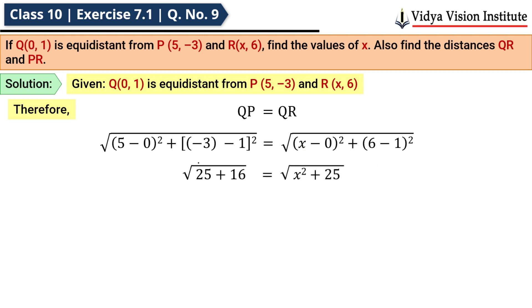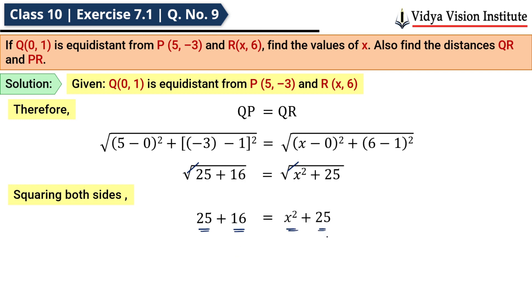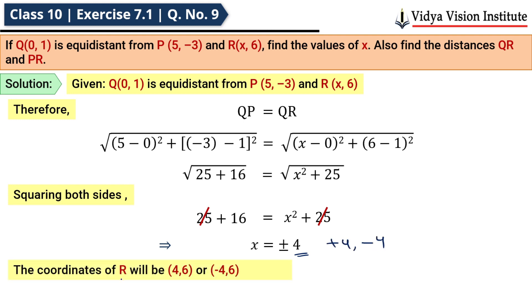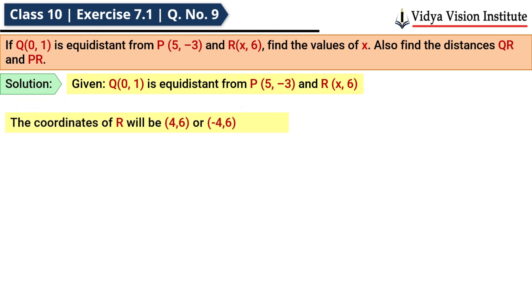Ab dono sides ko square kar lete hain, square roots katal jaate hain. Squaring both sides we get: 25 + 16 = x² + 25. Yahan 25 aur 25 cut ho jaate hain, so x² = 16, therefore x = ±4. Humein x ki 2 values milti hain: +4 aur −4, so coordinates of R will be (4,6) and (−4,6).